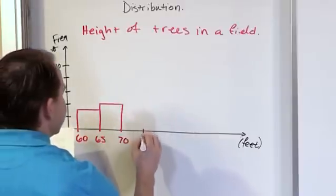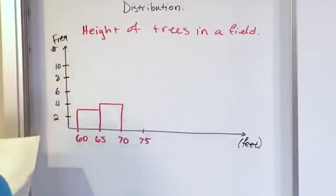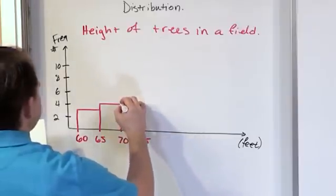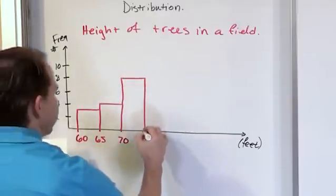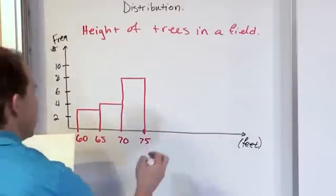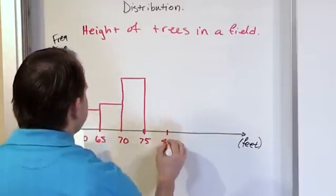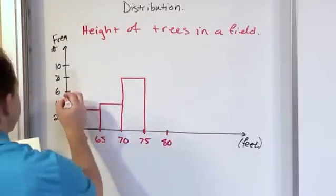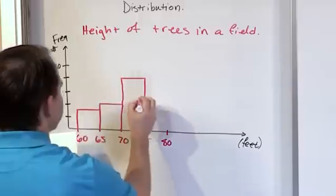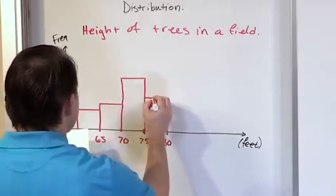Between 70 and 75 I had, let's say 8 trees. Straight up to 8, straight over, straight down. This is supposed to be right at 75. And then going on from 75 to 80, let's say I had 5. So this is about 5 right here.